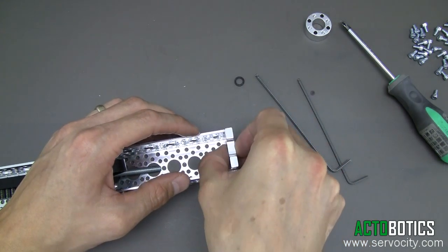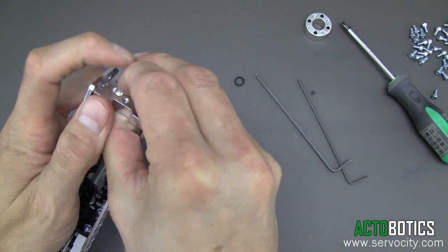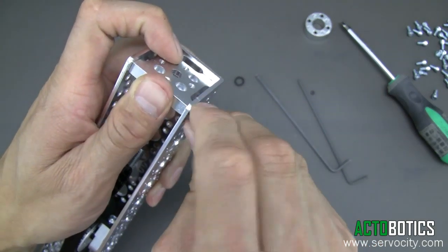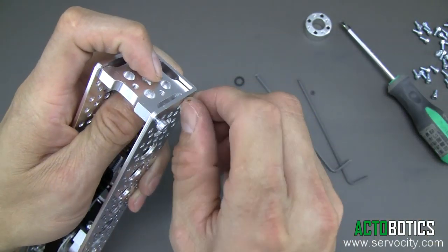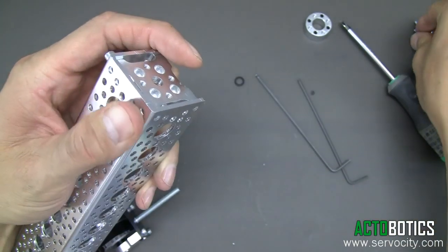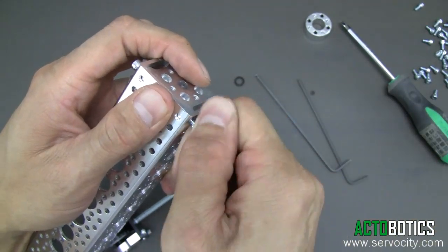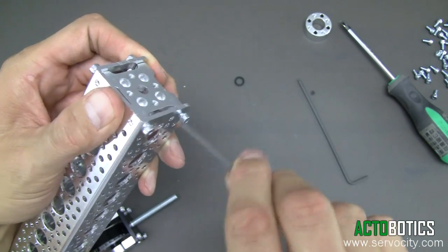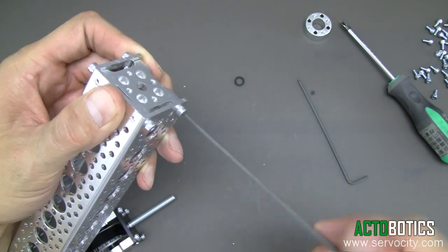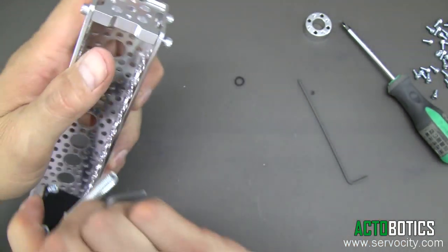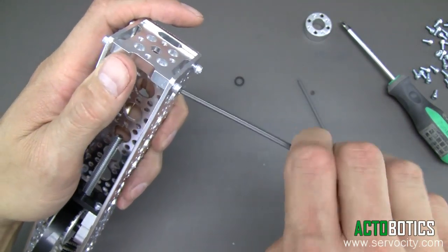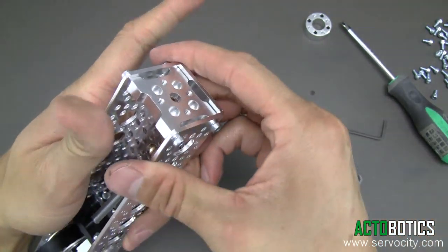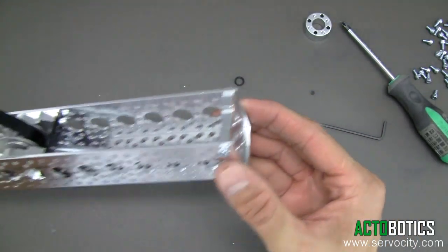Grab some more 6-32 by quarter inch length screws and tighten those down. Rotate it around, now we can tighten these. Your idler pulley with the belt attached will probably flop around, but don't worry about that. There you go, that's what it should look like so far.